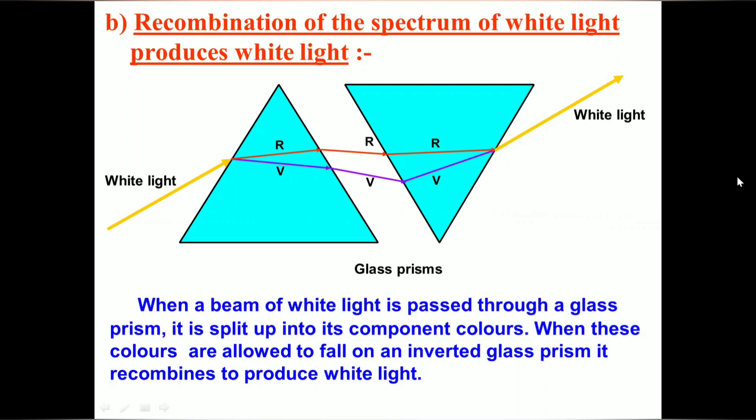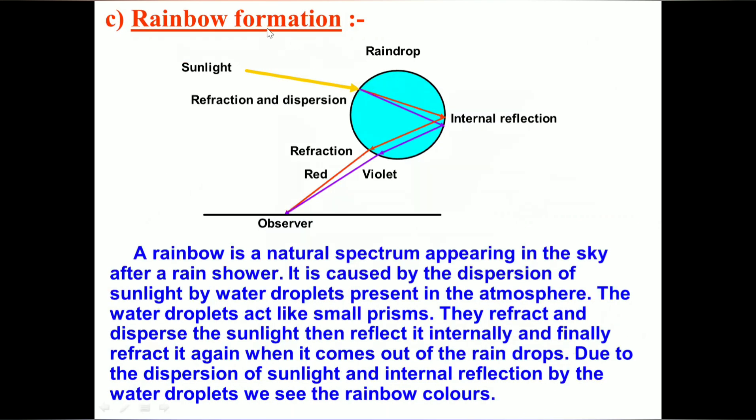We also studied rainbow formation. Rainbow is a natural phenomenon that occurs in the sky or atmosphere. This is how it looks like. When the light ray passes into the raindrop, dispersion phenomenon takes place. We already discussed this.